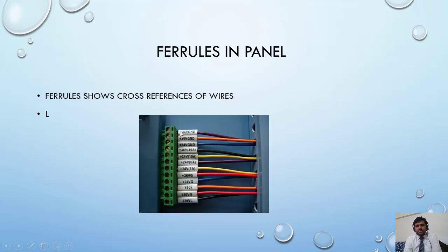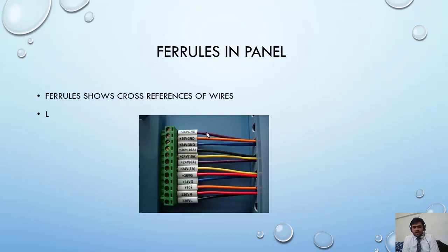If the ferule consists of information of both the local as well as the remote side — in other words, both the source and destination addresses are mentioned on the ferule — then it's called a cross ferule. It's always good to have a cross ferule, which is really useful for troubleshooting.